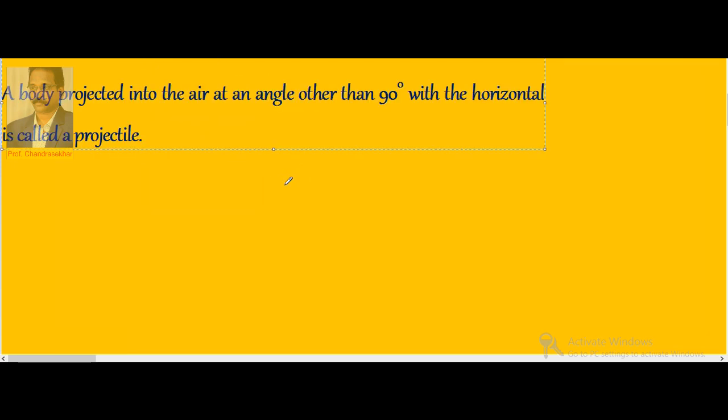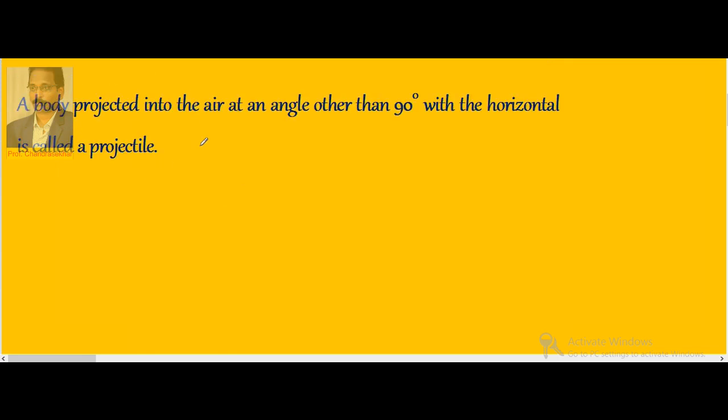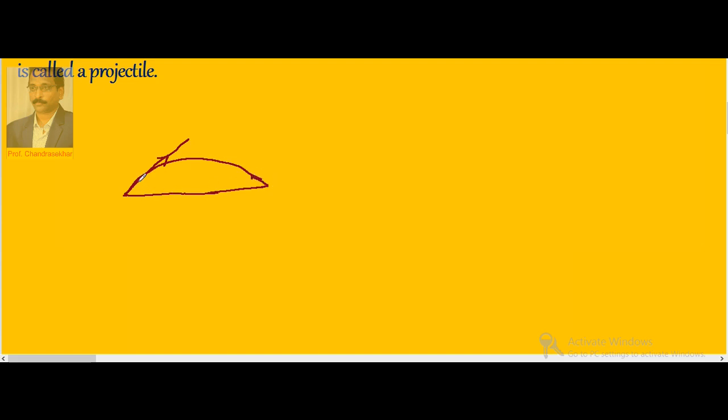We define a projectile as a body projected into the air at an angle other than 90 degrees with the horizontal. If it is 90 degrees, it becomes a vertically projected body. The body moves along this curved path because of gravitational force, and we have established that the path is a parabola.